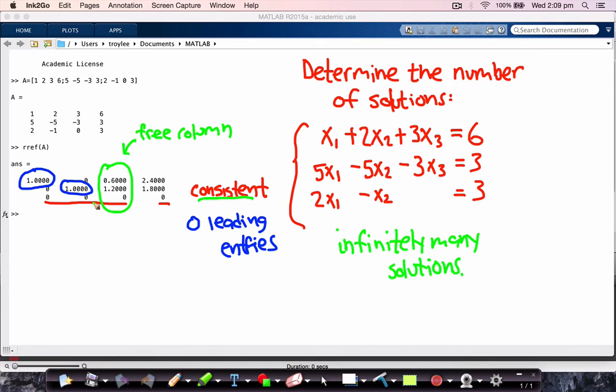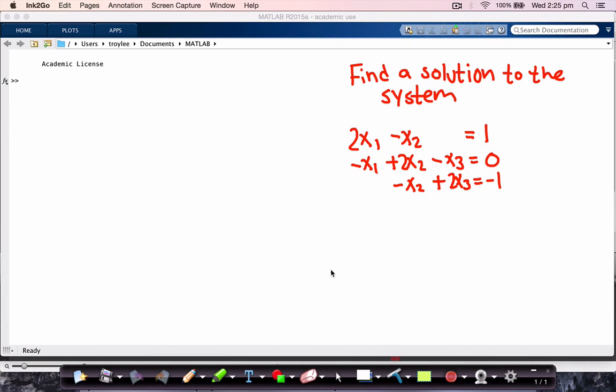Okay, so that's how you can use the reduced row echelon form command of MATLAB to help you with this kind of problem. Let's look at another example here. So here the problem is to find a solution to this system of linear equations.